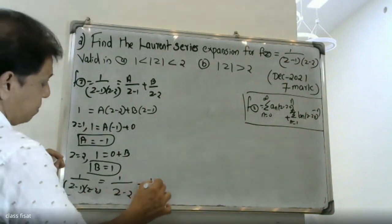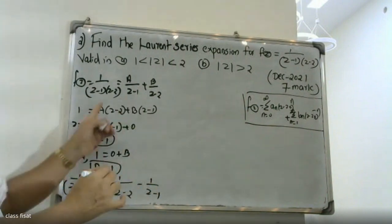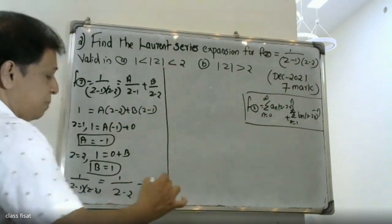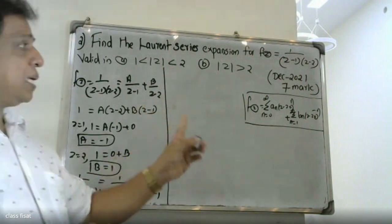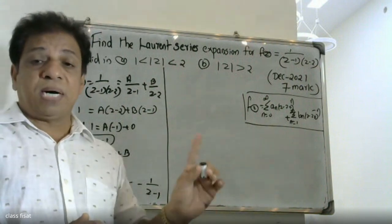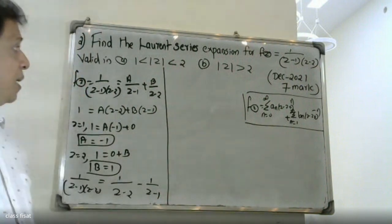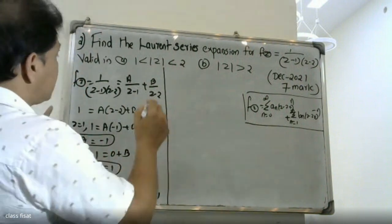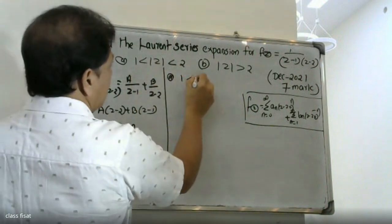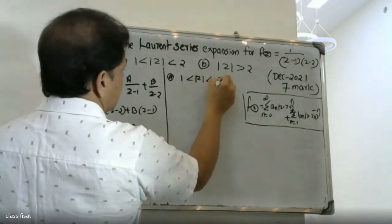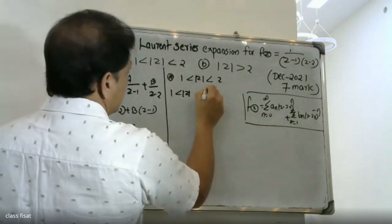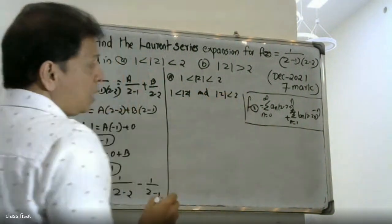So we have minus one times 1 divided by (z minus 1), and we need to find B. Setting z equal to 2: one equals A times zero plus B times (2 minus 1), so B equals one. Thus f(z) equals minus 1 divided by (z minus 1) plus 1 divided by (z minus 2).